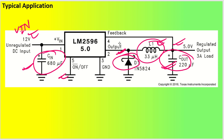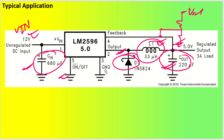For the adjustable version, two resistors are required to set the output voltage. The feedback is taken at this point — one resistor goes to feedback and the other to ground — and this is how Vout is set. We'll see the detailed design shortly.